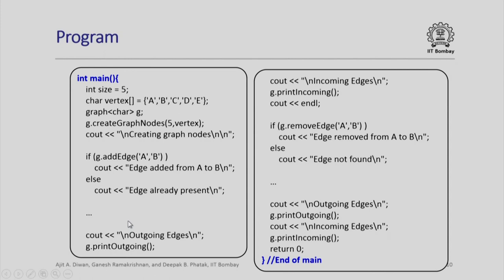In exactly the same way, after printing outgoing and incoming edges, when we try to demonstrate removal of edge, for example, the removal also will return a Boolean value and we will have to check that. If it is true, that means the edge has been removed, we will say so. Otherwise we will say edge not found. We will repeat the same statement for the demonstration of the second edge that we had added in our program.